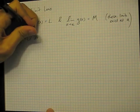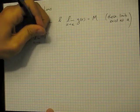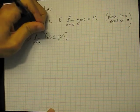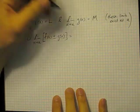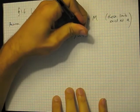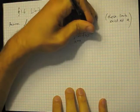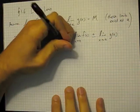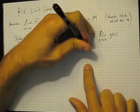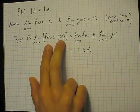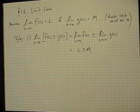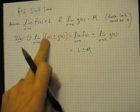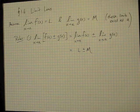Here's the first rule. The limit as x goes to a of the quantity f(x) plus or minus g(x) is obtained just by taking the limit of f plus or minus the limit of g, which equals L plus or minus M. So if you have two functions and you're taking the sum or difference, and they both have limits that exist at x equals a, you can compute the limit just by adding or subtracting the limits.